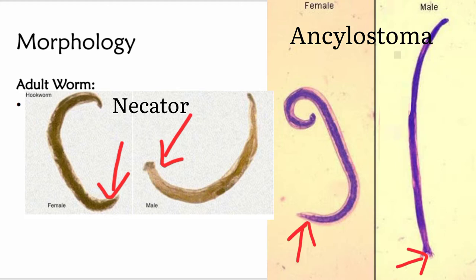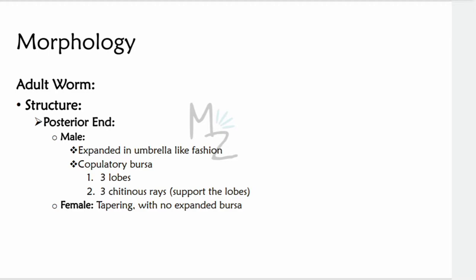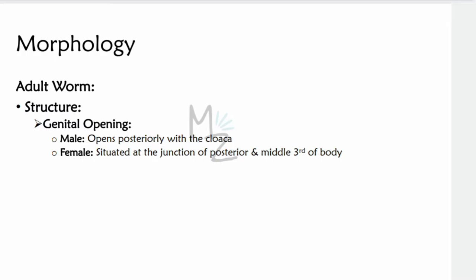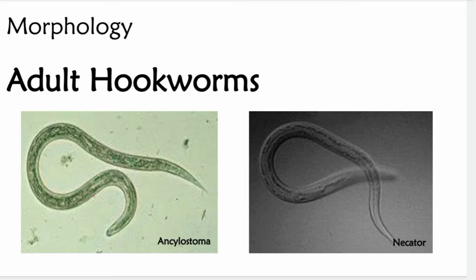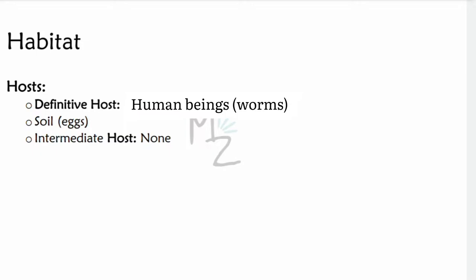Posterior end — male: it is expanded in an umbrella-like fashion, with a copulatory bursa having three lobes and three chitinous rays that support the lobes. The female is tapering at the posterior end without the expanded bursa. Genital opening — male: opens posteriorly with cloaca. Female: the genital opening is situated at the junction of the posterior and middle third of the body. As you can see in this picture, these are the female adult hookworms — on the left is Ankylostoma and on the right is Necator.